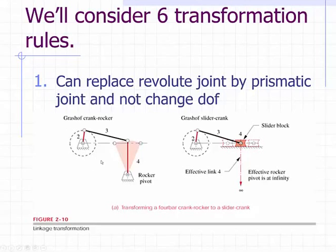on the left consider this mechanism called a Grashof crank rocker. It has four links: a ground link, a crank here in red, a coupler shown here in black, and an output rocker here shown in red. As the revolute joint at the end of the crank moves around this circle, this rocker output link swings back and forth through this shaded area.